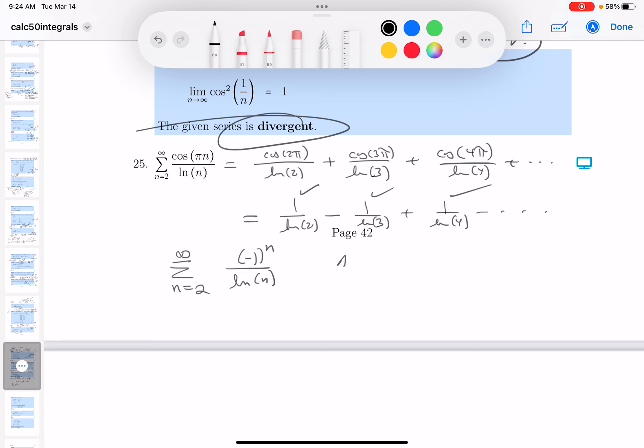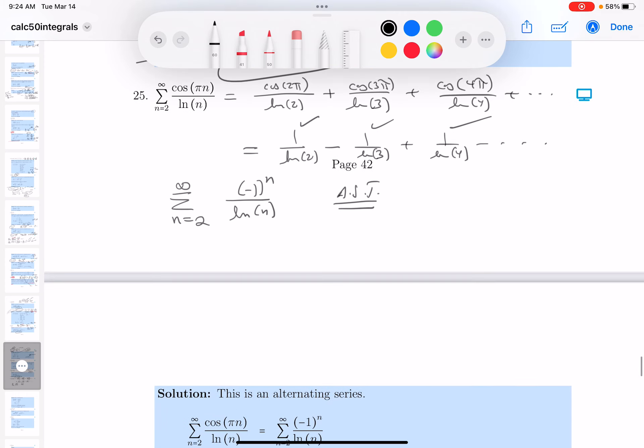I have an alternating series, an AST. And that's what I'm going to do, alternating series test. And what I'm going to do, I'll write down a_n for you. a_n is 1 over the natural log of n. Again, we're using alternating series test on it. And what do I know? There's two things I need to show.